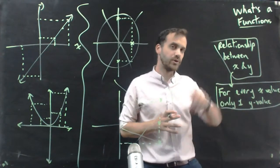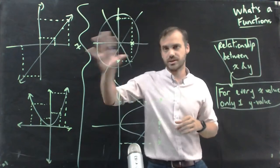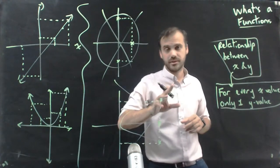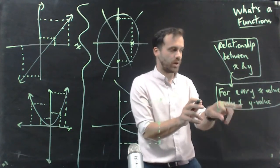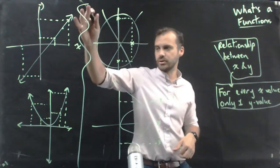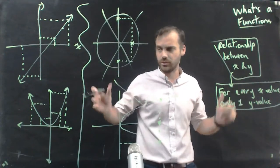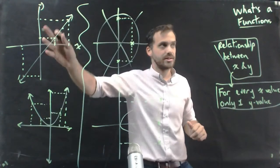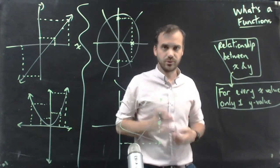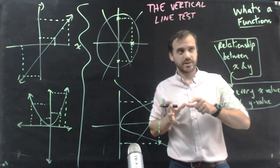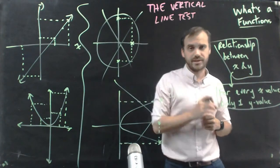Hopefully now you have a feel for what a function is. It's a relationship between x and y, which all of these are. But for every x-value, there is only one y-value. And only these fulfill our function criteria. Alright, simple rule for this: to determine whether something is a function or not, you can use the vertical line test.